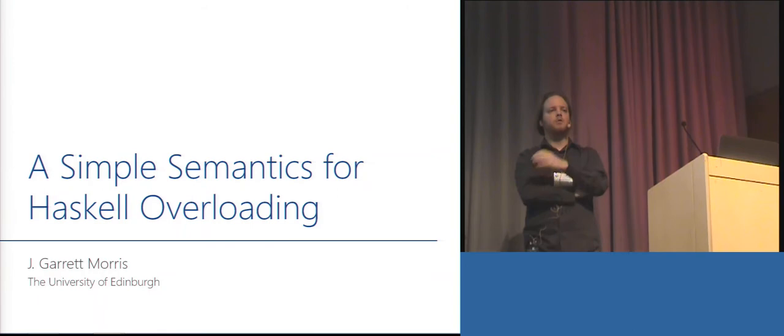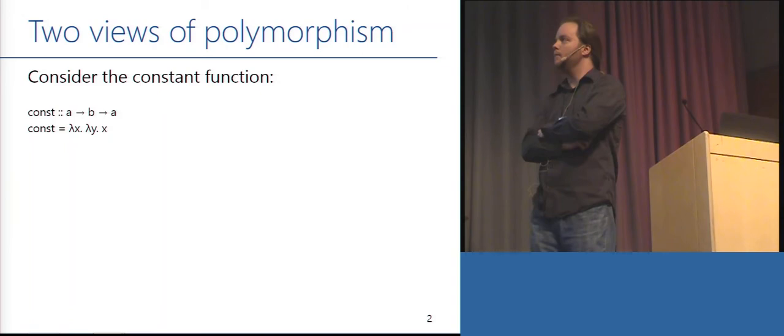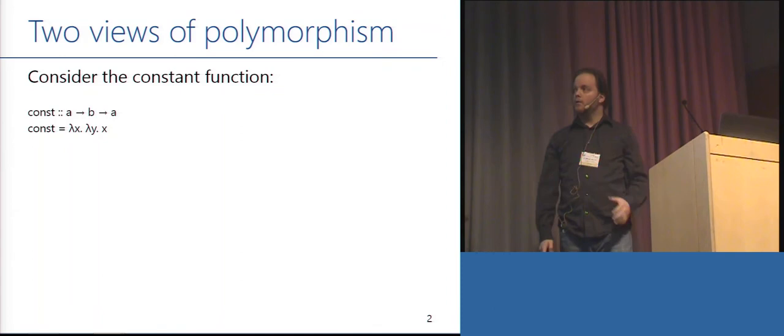A bunch of you are probably thinking this talk is going to be very short — we're going to have a long break because we already know how to think about programs with type classes. We think about them by translation to an explicitly typed language. So if we have the constant function, we can translate this from an implicitly polymorphic Haskell-style language to an explicitly typed, explicitly polymorphic syntax.